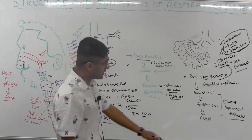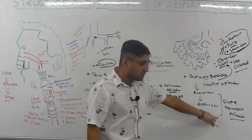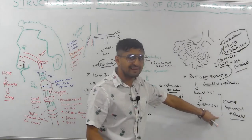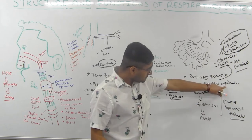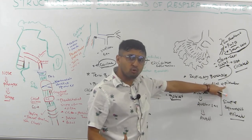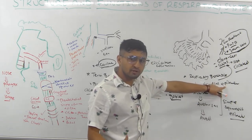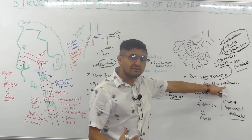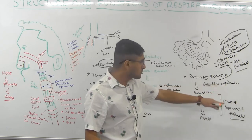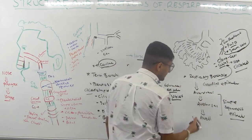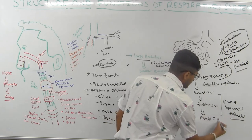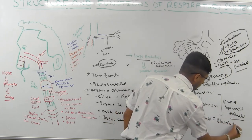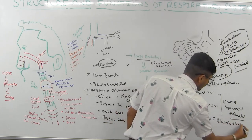As you go from trachea down into the lungs, you see an increase in elastic fibers, because the lungs have a lot of elastic properties. This is why the lung always wants to recoil inward. In the alveoli especially, there is a lot of elastic tissue.